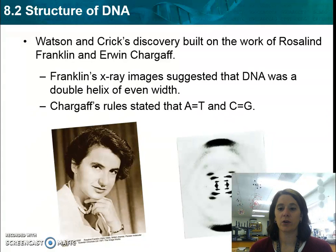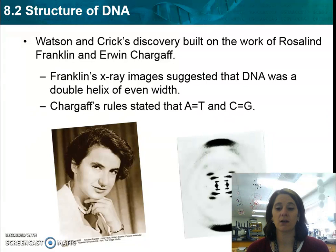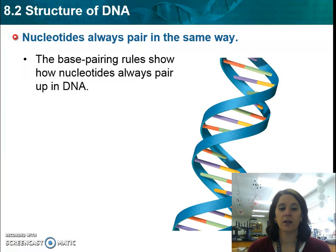Two of the scientists that Watson and Crick worked with were Rosalind Franklin and Erwin Chargaff. Franklin used x-ray images to suggest that DNA was a double helix made of equal widths, with purines and pyrimidines pairing together. Chargaff was the one who stated that A equals T and C equals G, meaning that adenine always pairs with thymine and cytosine always pairs with guanine.